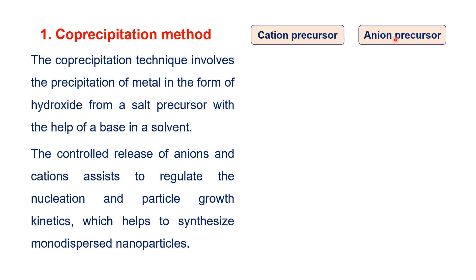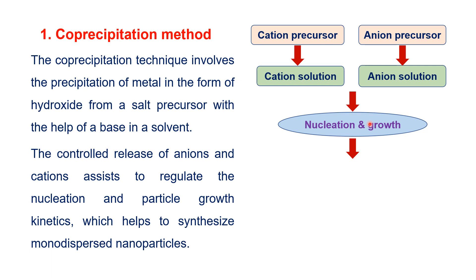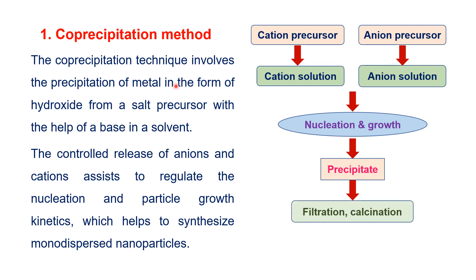In co-precipitation, cationic and anionic precursors are dissolved in a specific solvent to produce cationic and anionic solutions. These are mixed together to produce a nucleus or first particle. After particle growth, a precipitate forms in the form of metal hydroxide. This is then filtered and calcined to yield the nanoparticle. The controlled release of anions and cations helps regulate nucleation and particle growth kinetics, enabling synthesis of monodisperse nanoparticles within a given size range.